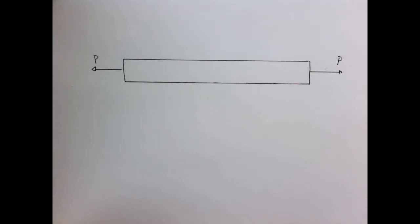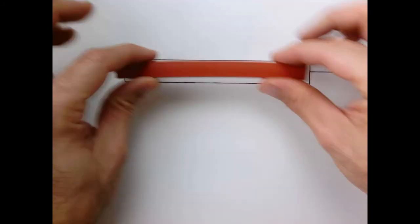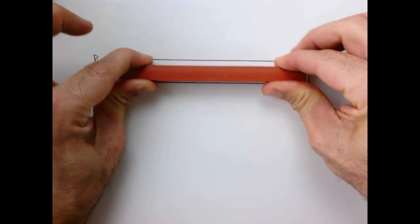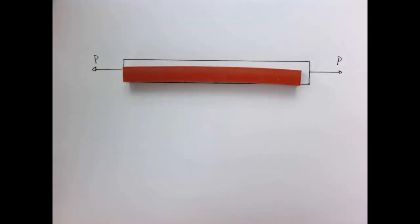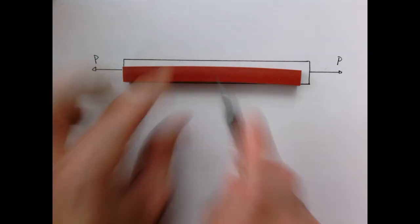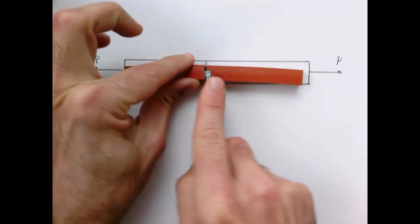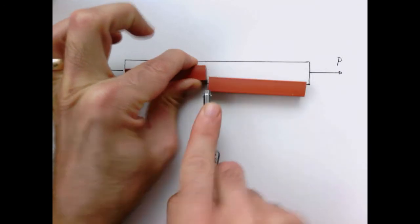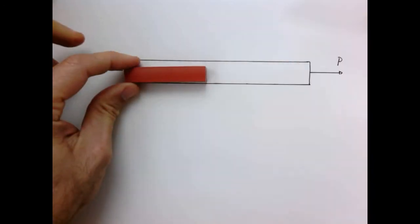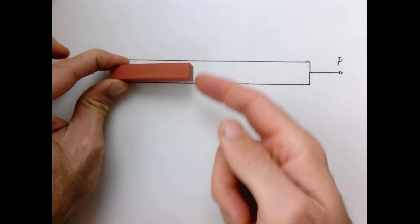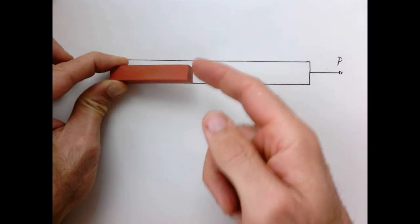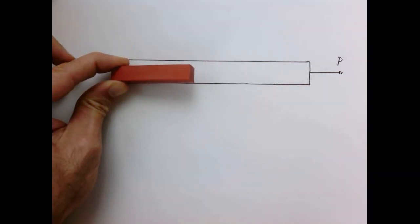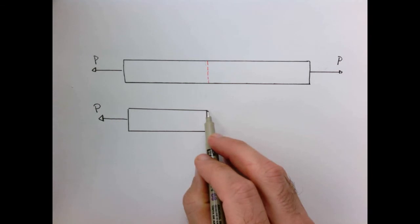Let's discuss what the stress distribution inside our bar looks like. So here we have our bar that we're pulling on with a load P. So I'm simply pulling on it. And what we want to do is we want to ask the question, if I virtually slice this bar, what are the forces that are going to be acting on that section? So I'm going to take my bar, I'm going to cut it, and then I'm going to remove this half. And once I pull on it, I'm going to ask the question, on this surface here, what are the forces or what is the state of stress that is holding this bar in equilibrium?